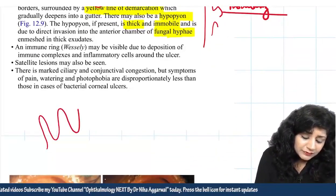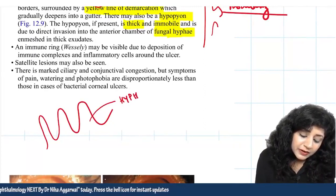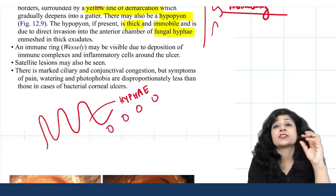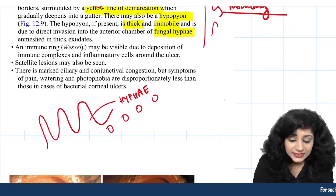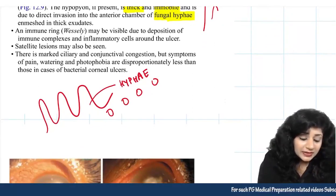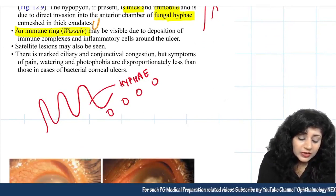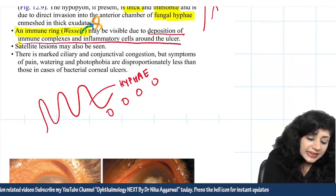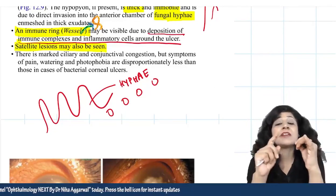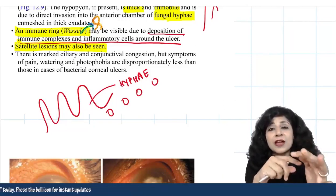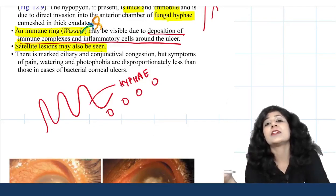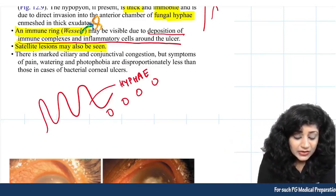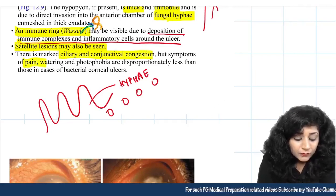Finger-like projections are seen due to fungal hyphae, and multiple satellite lesions are present. The hyphae extend into the hypopion, making it non-mobile. An immune ring of Wesley is visible, caused by deposition of immune complexes and inflammatory cells. Multiple satellite lesions with feathery margins, raised edges, and a dry grayish appearance are classic MCQ features of fungal keratitis.